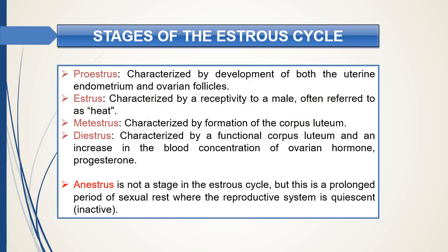Briefly, the four phases of the estrus cycle are: proestrus, characterized by development of both uterus and ovaries; estrus, the phase where receptivity to a male is present; metestrus, characterized by formation of the corpus luteum; and diestrus, where progesterone — a hormone of the ovary — increases in concentration. Anestrus, the term used by Heap in 1900, is not a phase in the estrus cycle but a prolonged period of sexual inactivity — sexual rest — in which the reproductive system remains in a dormant state.